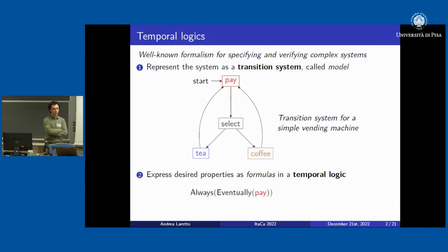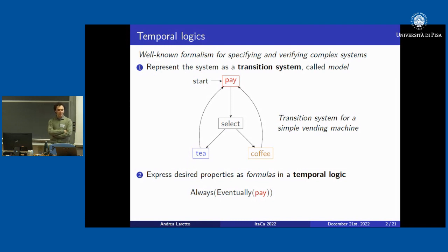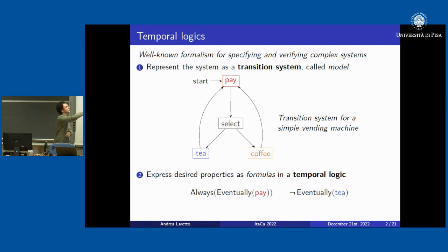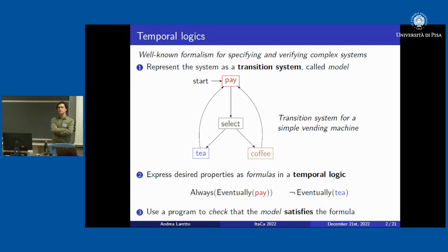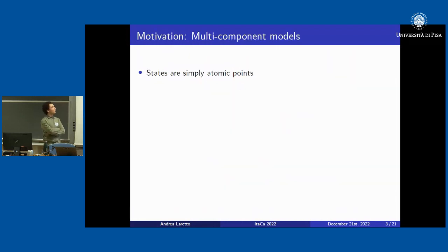The idea is to express the properties you want your system to satisfy as formulas in temporal logic. For example, a formula might say that you always eventually end up in a state where you pay, but you do not always end up in a state where the machine gives you tea — for instance, you might always get only coffee. A program then automatically checks whether these formally specified properties are satisfied by the model.